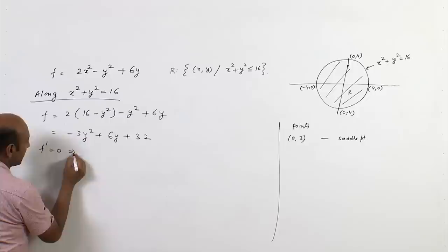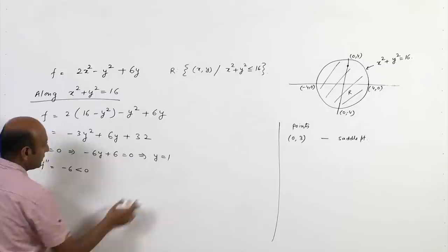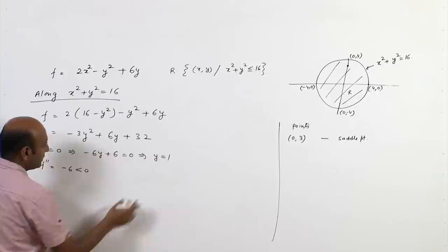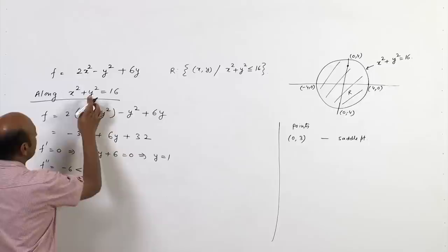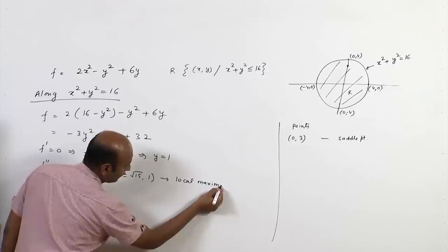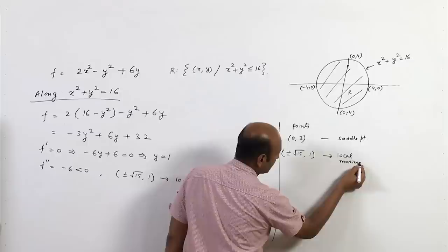Differentiating and setting equal to zero: -6y + 6 = 0 implies y = 1. The second derivative is -6, which is negative, so this is a local maximum on the boundary. When y = 1, x = ±√15. So the points (√15, 1) and (-√15, 1) are local maxima on the boundary.